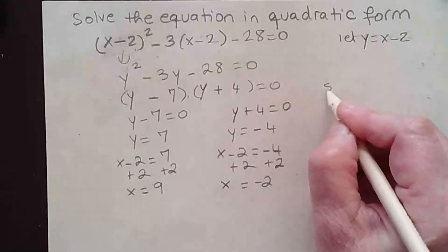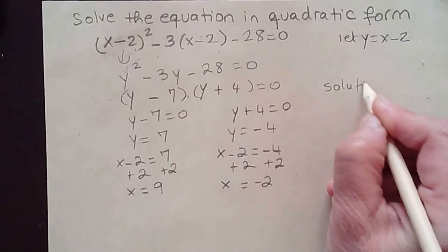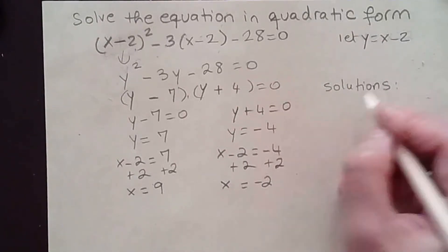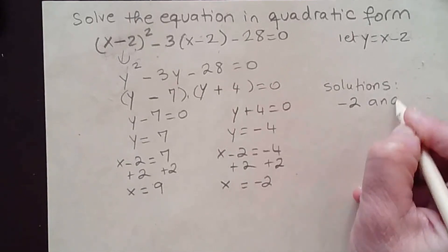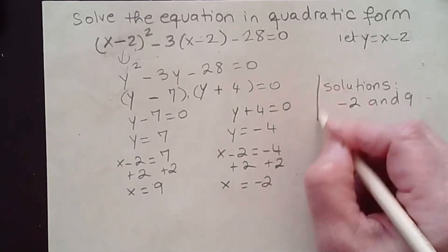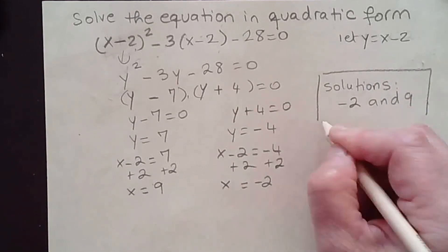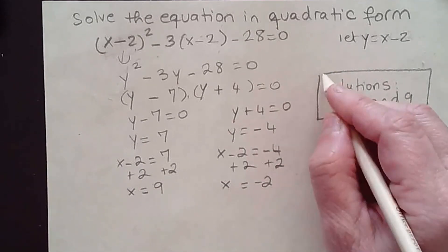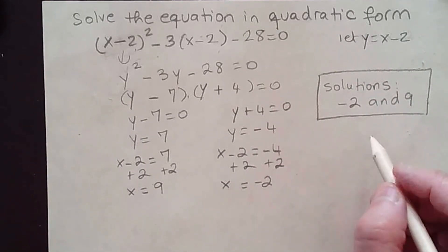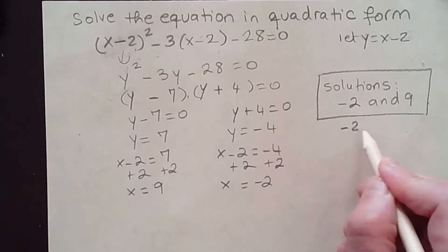So the solutions are -2 and 9. In your assignment, you just enter the solution and separate them with a comma.